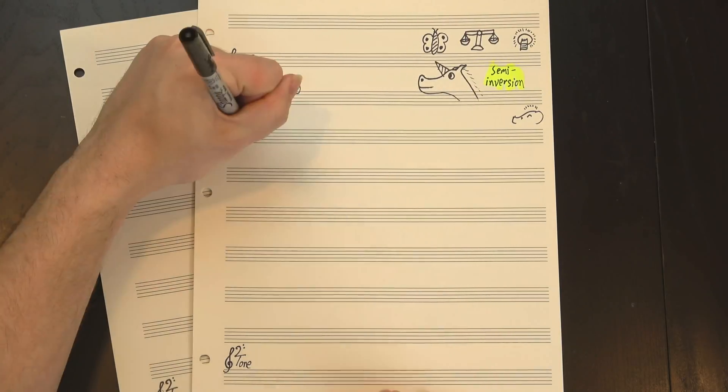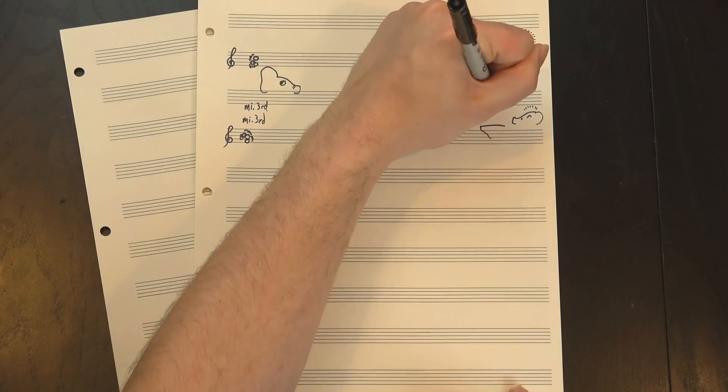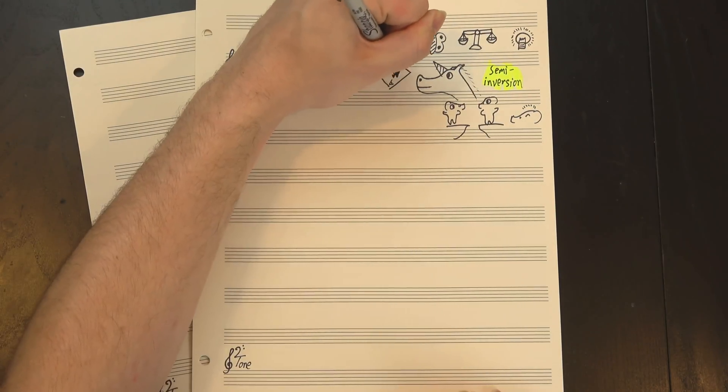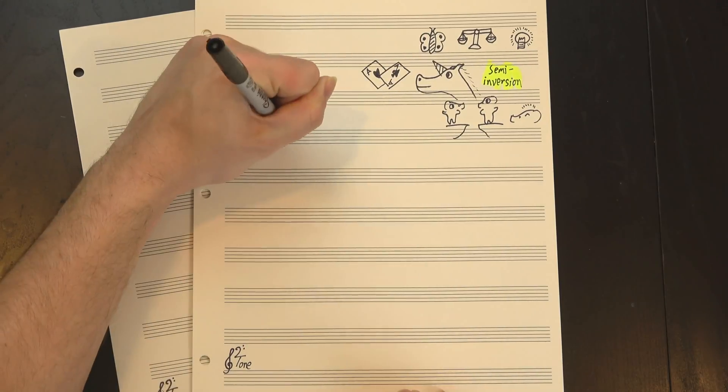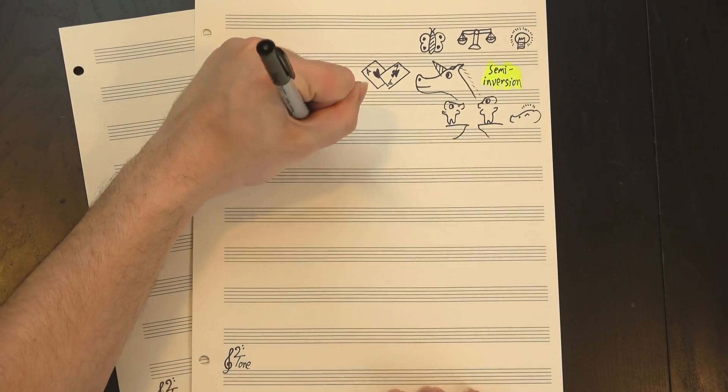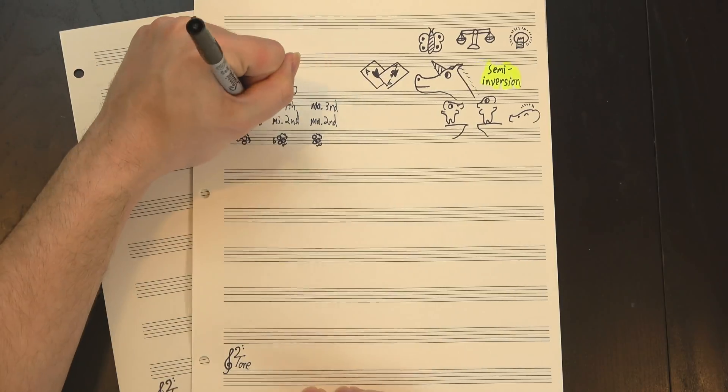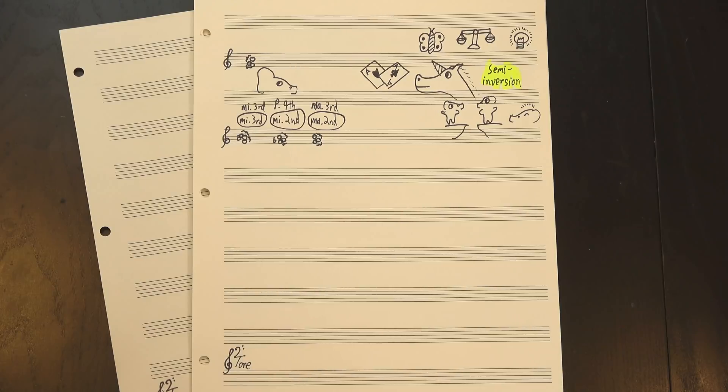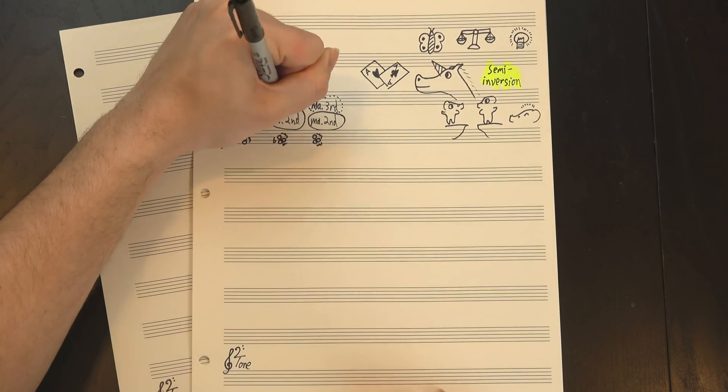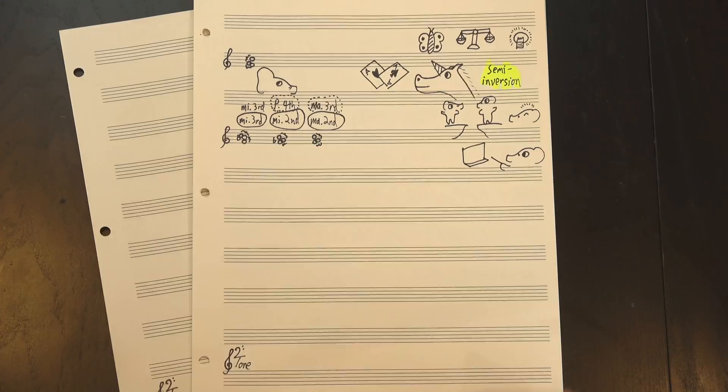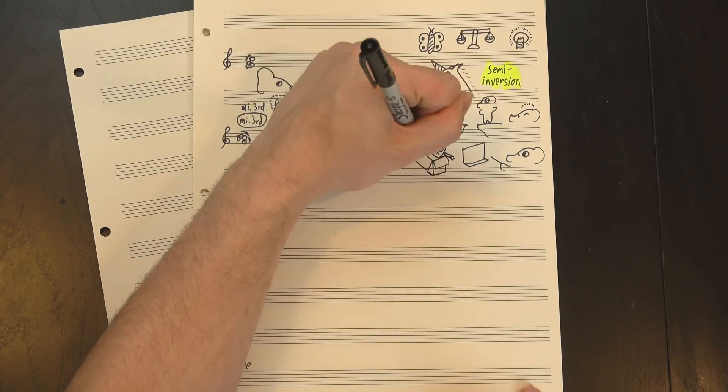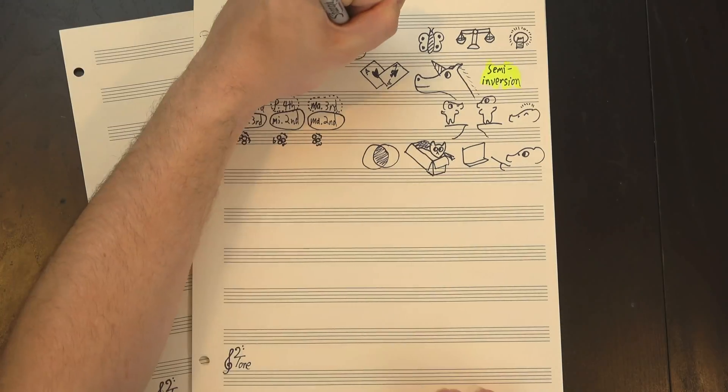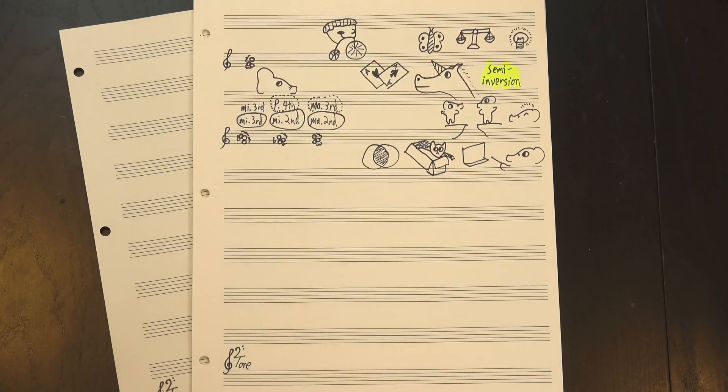As we just saw, the minor 3rd semi-inverts to itself, which is why we can't include any notes a minor 3rd away from our tritone. The other four interval classes split up into two pairs, the minor 2nd semi-inverts to the perfect 4th, and the major 2nd semi-inverts to the major 3rd. So if we just position our minor 3rd so that each of its notes is either a minor or major 2nd away from one of the tritone notes, the rest of the intervals will just take care of themselves, which brings me to the really good news. There is no way to not do that. As long as the minor 3rd and the tritone don't intersect, the resulting chord will always contain all six interval classes.